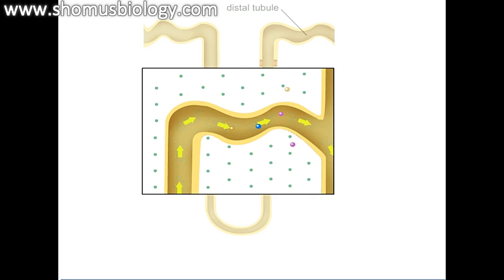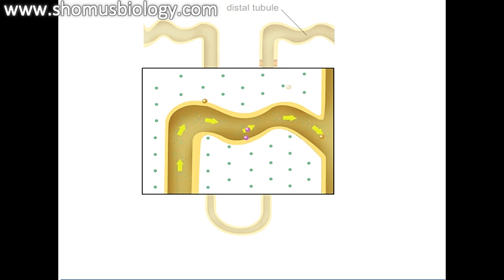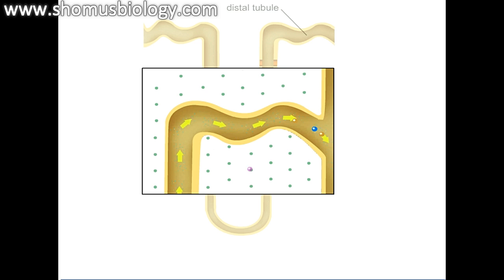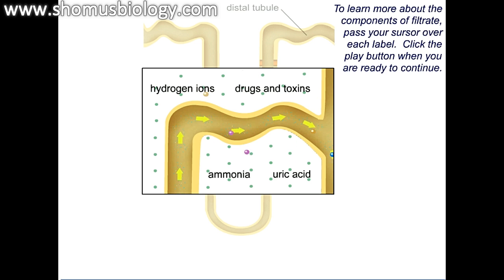The distal tubule is the site of active tubular secretion of materials from the blood into the filtrate. Although tubular secretion occurs throughout the filtrate pathway, it is especially active in this part of the nephron. Salt continues to be actively pumped out of the distal tubule, and this movement of salt creates an osmotic gradient that causes water to flow out of the tubule by osmosis. Materials in the capillaries surrounding the nephron are also actively pumped into the tubule and become part of the filtrate.